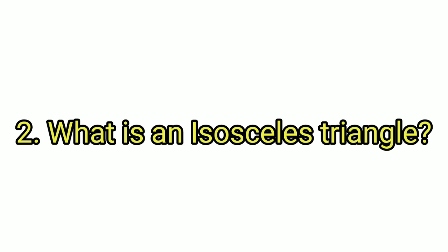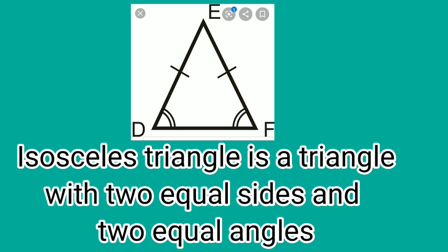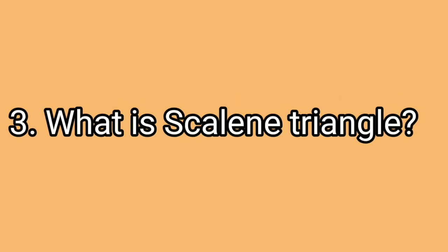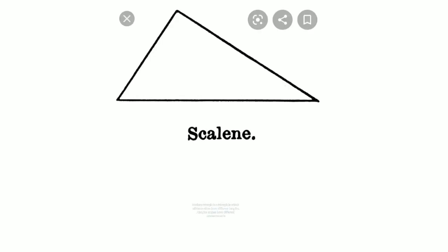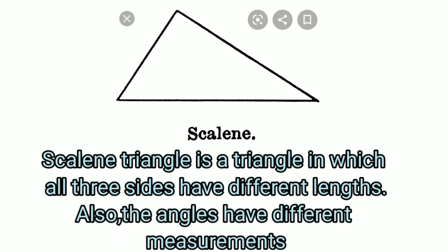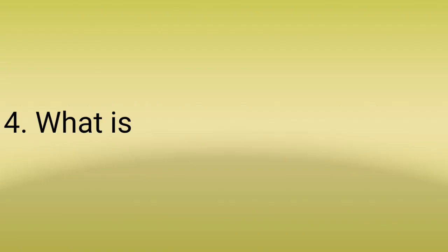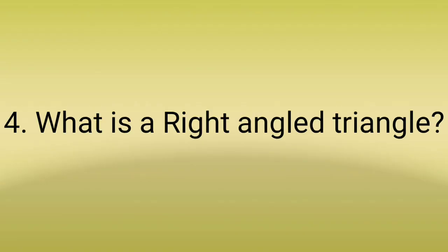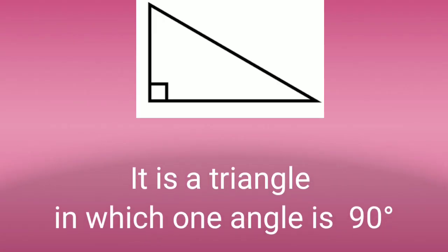Isosceles triangle is a triangle with 2 equal sides and 2 equal angles. Scalene triangle is a triangle in which all 3 sides have different lengths and the angles also have different measurements. A right angle triangle is a triangle in which one angle is 90 degrees.